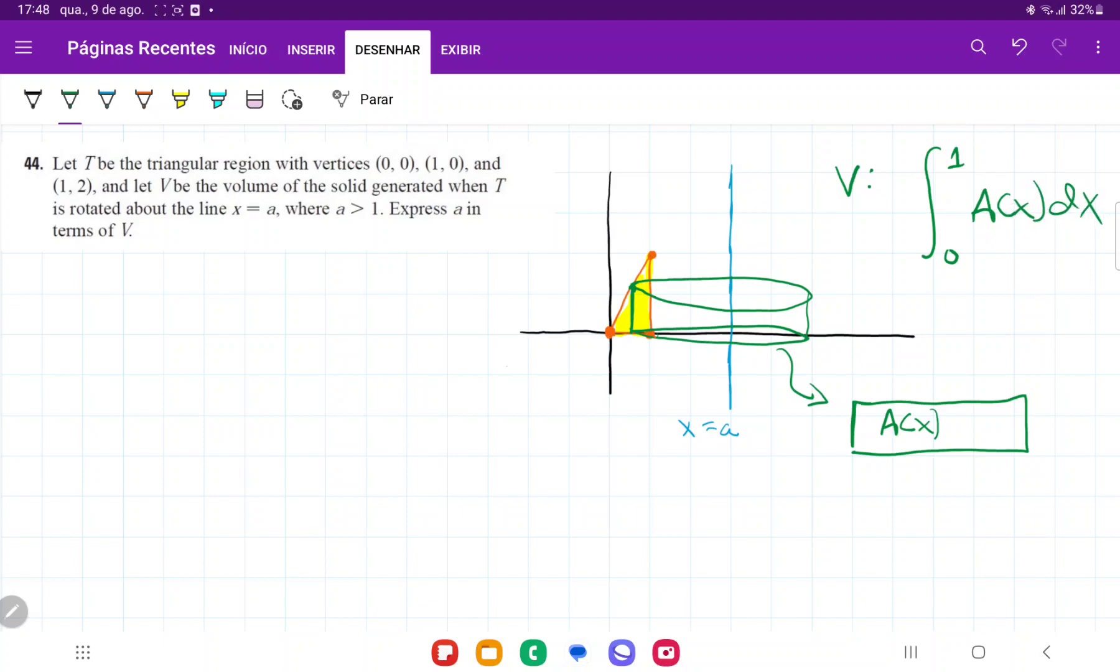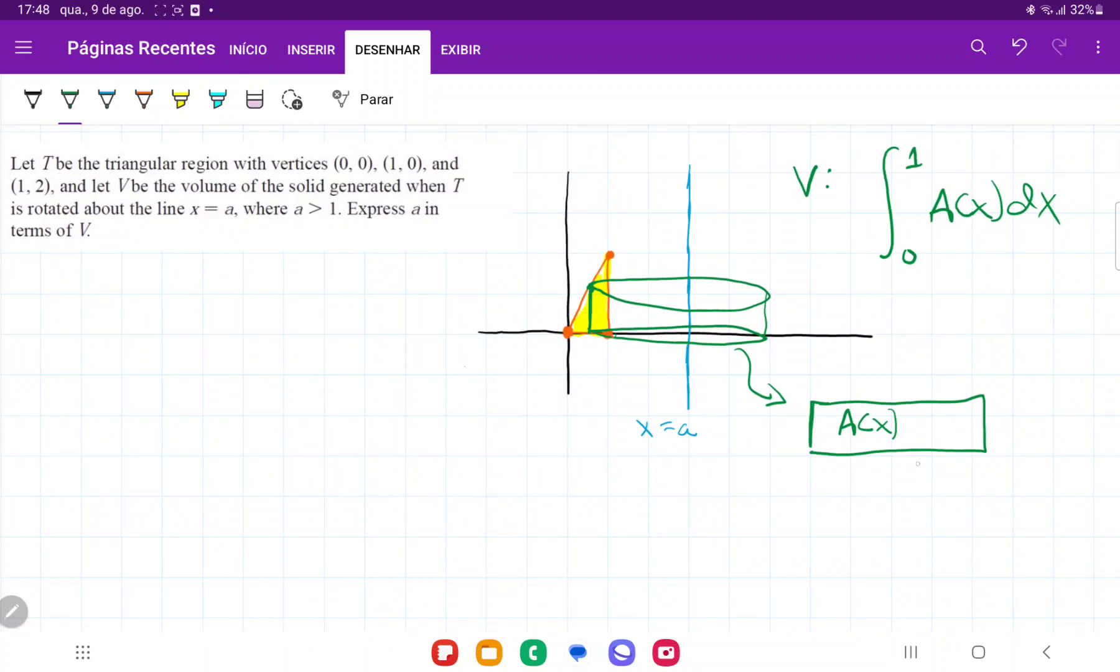And so my volume is going to be the sum from 0 to 1 because these two points are from 0 to 1, and we're summing up all these cylinders here. So A(x)dx. We're summing it up across the x-axis. And so we need to just be able to express this area in terms of x so that I can integrate. And this is just a rectangle. So my area is going to be base times height.